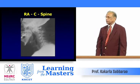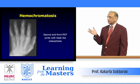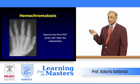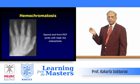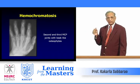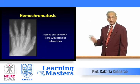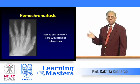In hemochromatosis, the second, third, and occasionally fourth metacarpophalangeal joints are narrowed due to cartilage involvement, and osteophytosis naturally occurs to support the joint. Why can't this be osteoarthritis? Because osteoarthritis is not restricted to the metacarpophalangeal joints — it primarily involves the distal interphalangeal joints. That is how you differentiate hemochromatosis from generalized primary osteoarthritis.